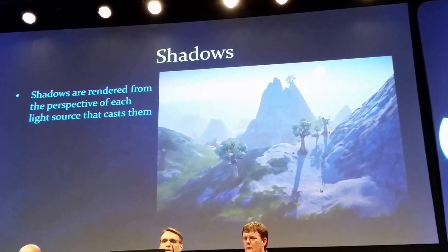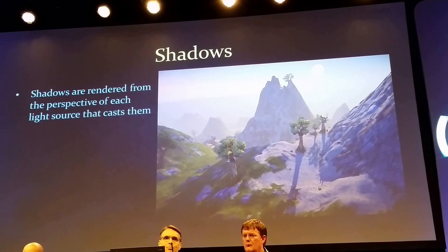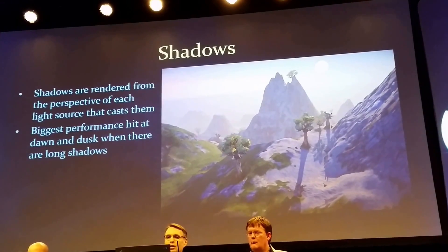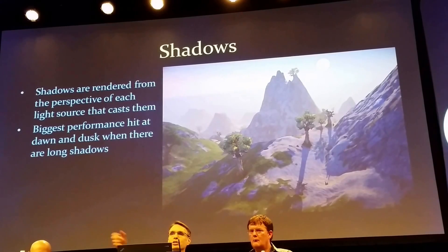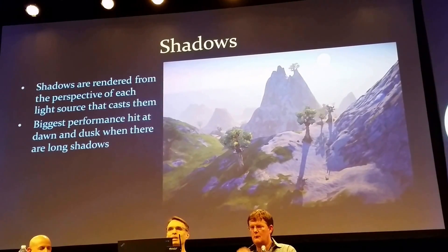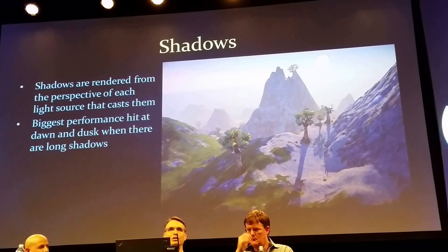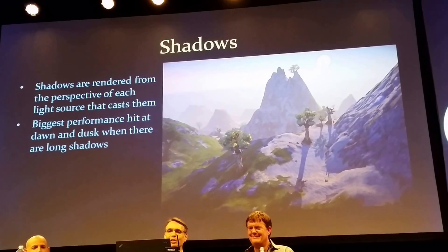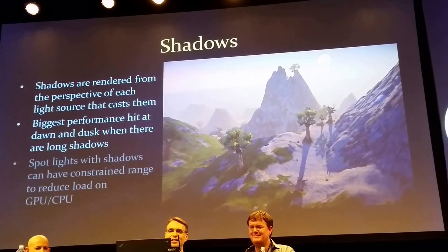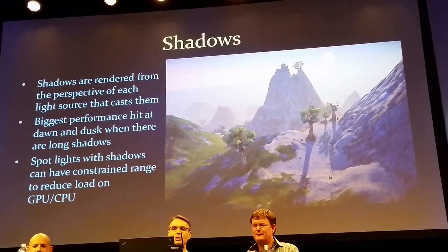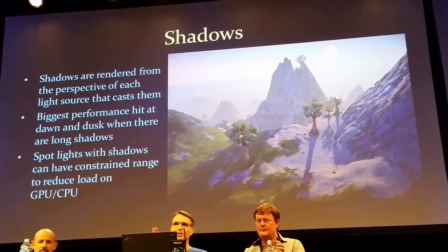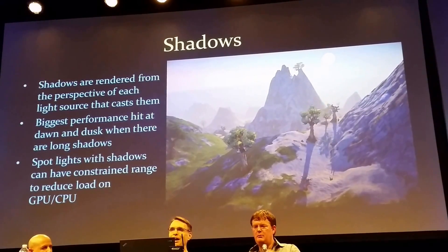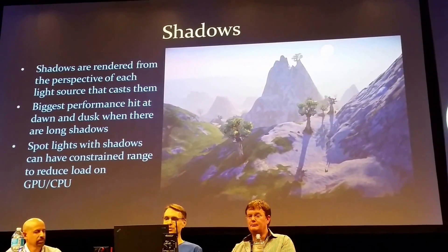Shadows are rendered from the perspective of each light source that casts them, so they can take quite a while to render. The worst times are during dawn and dusk when you have extremely long shadows. Some games go to the extent of turning off shadows during dawn and dusk periods so it doesn't slow down their framerate, but we think they look too cool to turn them off. With spotlights and shadows, you can constrain their range to reduce the load on your processor and graphics card — the trick is you don't want to have a bunch of them in the same spot.